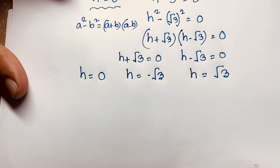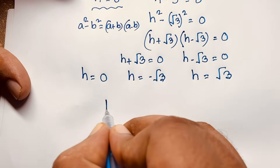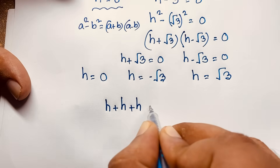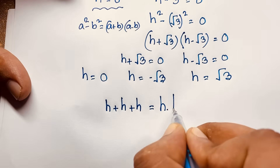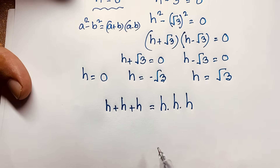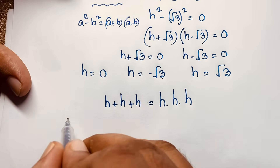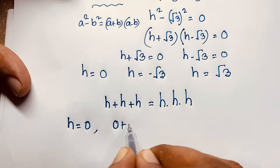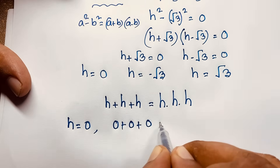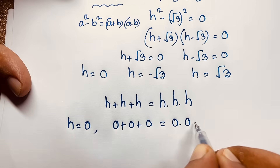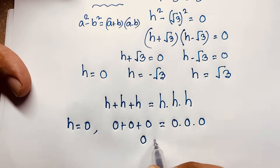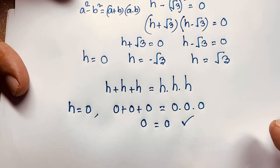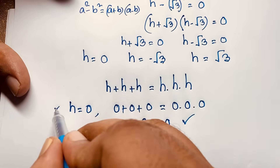Let's verify our question: h plus h plus h equals h times h times h. First, for h equals 0: 0 plus 0 plus 0 equals 0 times 0 times 0, giving 0 equals 0. Left hand side and right hand side are both equal to 0, so h equals 0 is confirmed as correct.